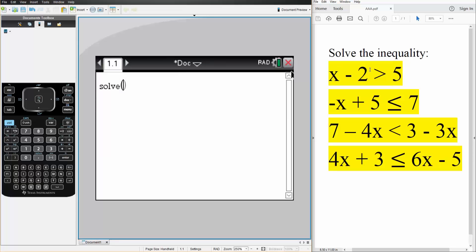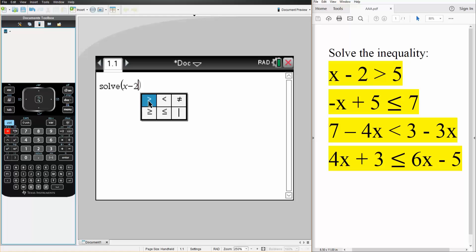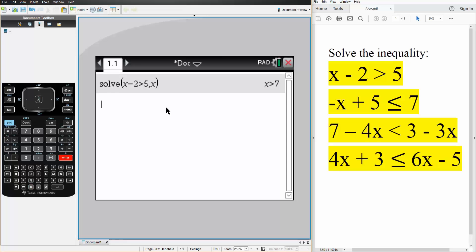So we have x minus 2 is greater than 5. So I hit this icon right here, ctrl, this icon equal, ctrl, equal. I have x minus 2 is greater than 5. I want to solve for x, so comma x. I hit enter, and the answer is x is greater than 7.